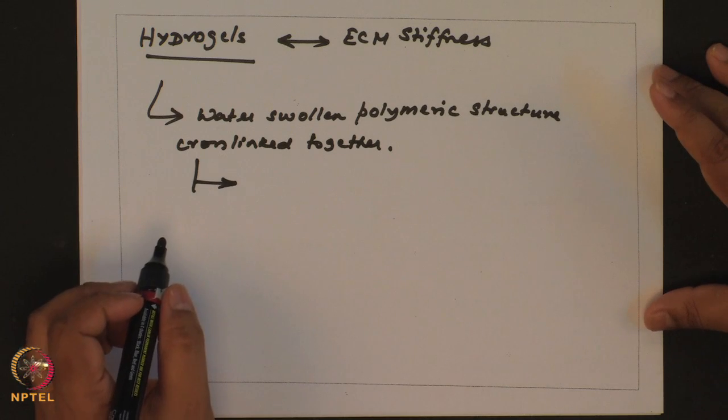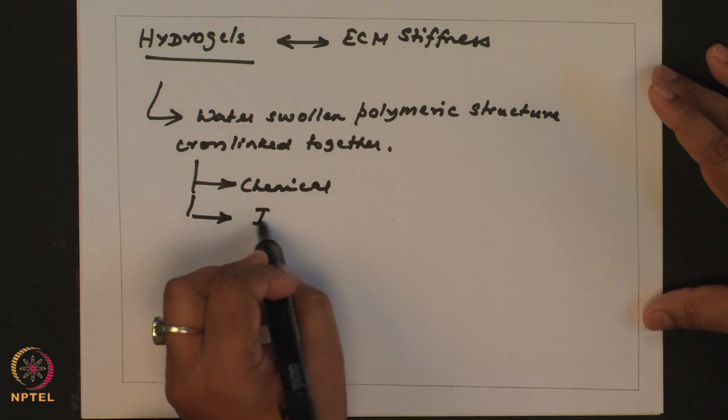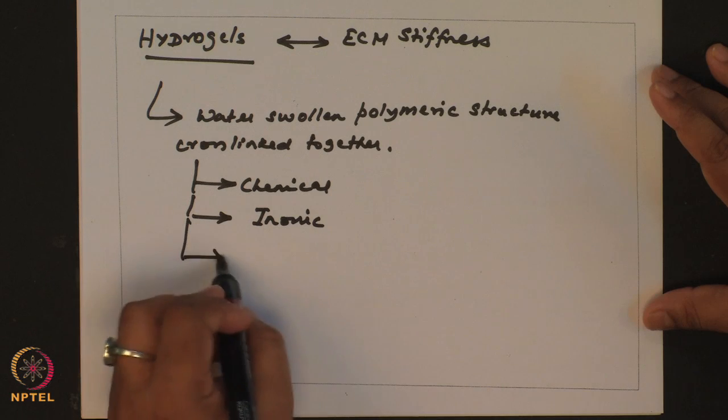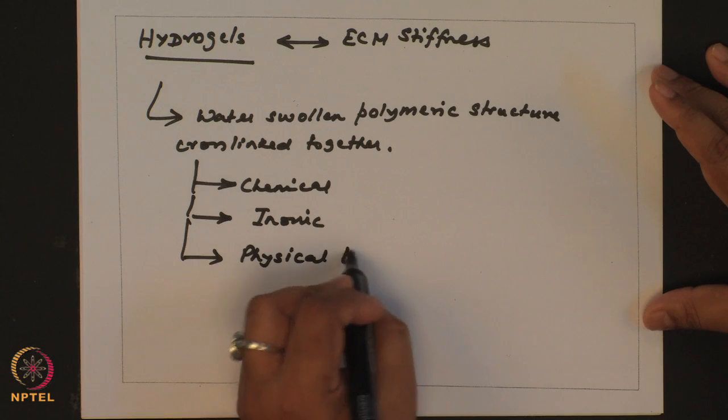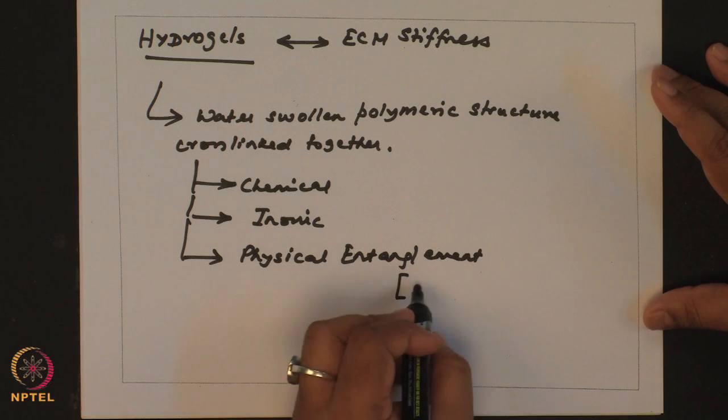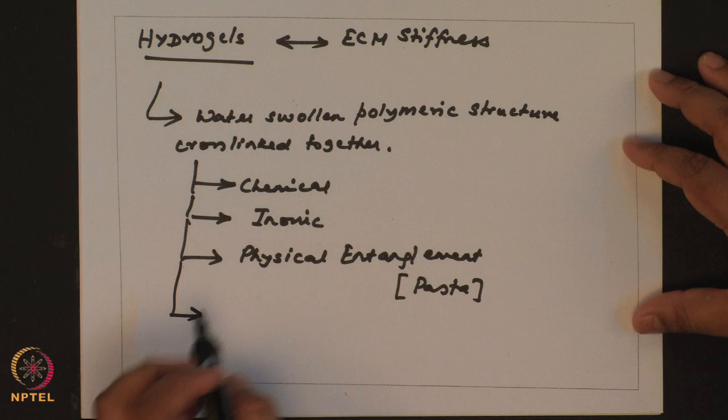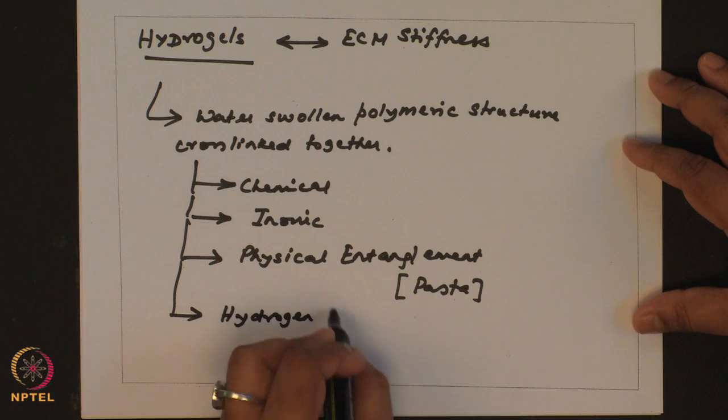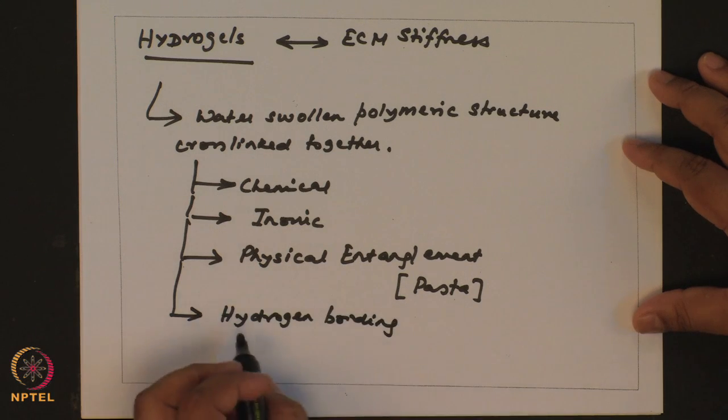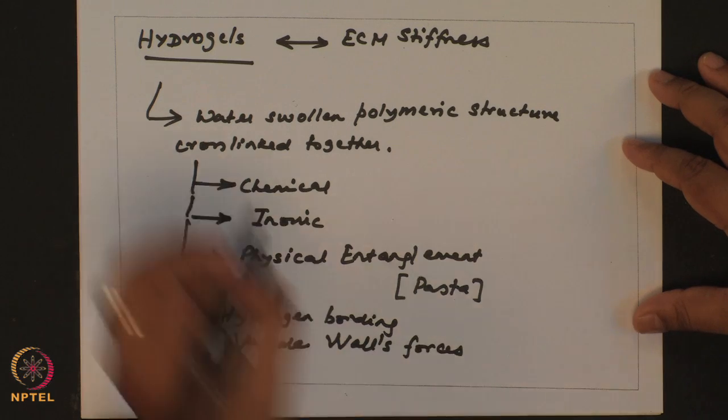The source of the crosslink might vary. It might be chemical by covalent bonds. It might be ionic. You might have simple physical entanglement. Physical entanglement, simple example is that of pasta - even pasta if you want to take out a single strand, you require to exert some forces. Or you might have weak hydrogen bonding or van der Waals force mediated forces. These are the different sources in which you can make the hydrogel.